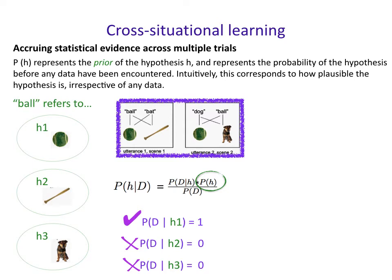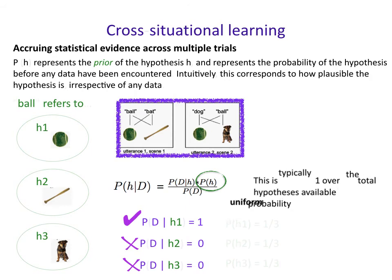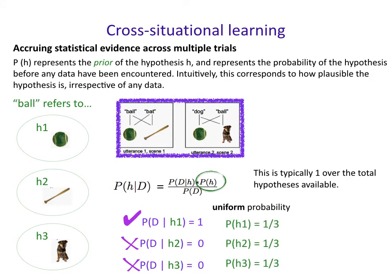The second piece in the numerator is called the prior, P(h) — the probability of the hypothesis on its own before any data have been encountered. Intuitively, this corresponds to how plausible the hypothesis is irrespective of any data. If you have a bias towards one kind of hypothesis, that would affect the prior. In this case, if there's no reason to consider one hypothesis more complex or probable than another, these hypotheses receive uniform probability — one over the total number of hypotheses. Since there are three available, the prior for each is one-third.